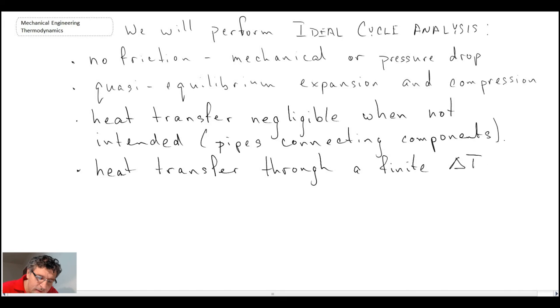Another assumption that we will make as part of ideal cycle analysis is that heat transfer is going to be through a finite temperature differential. What this means is that the cycles that we're analyzing are not externally reversible. In order to have it externally reversible, we would have to have heat transfer through an infinitesimal delta T, which we said is really not practical for real engines or any kind of cycle that we study.